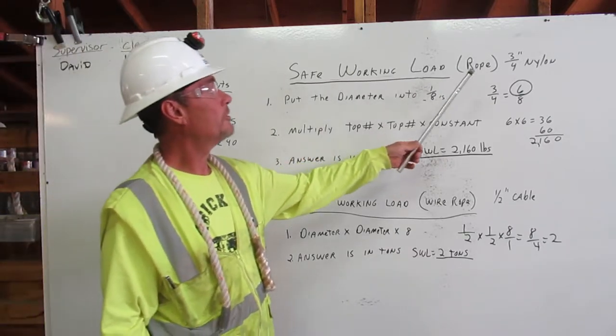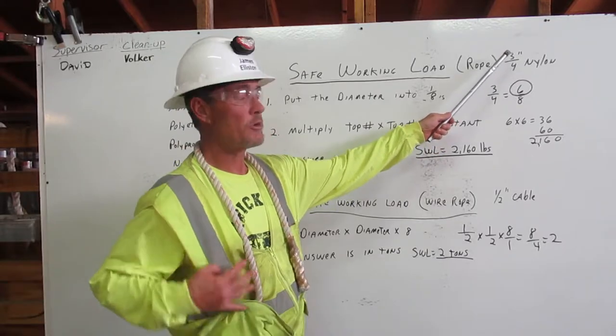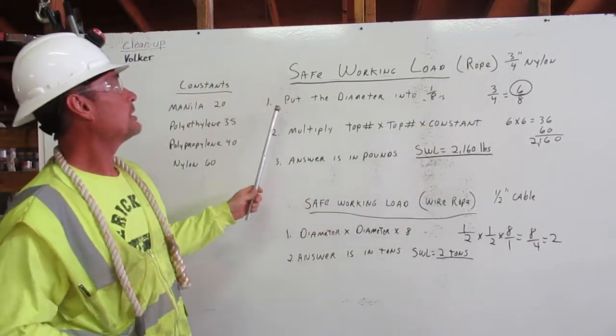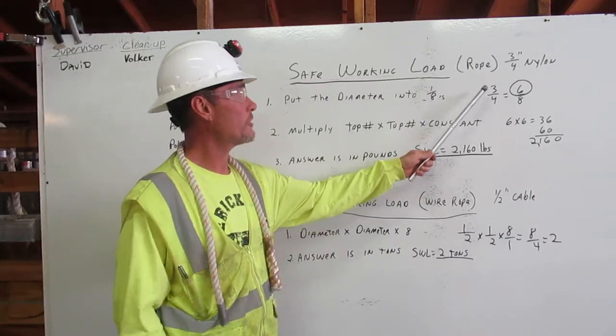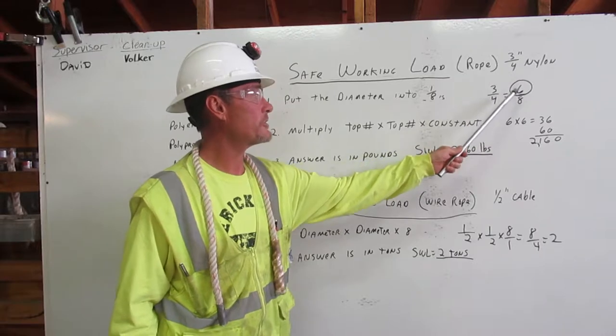Safe working load for rope: we are going to use three-quarter inch nylon. One, put the diameter into eighths. It is three-quarter inch, so three-quarter equals six-eighths. I have circled the six.